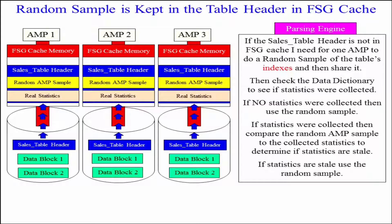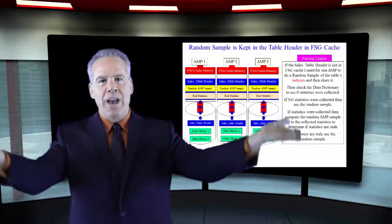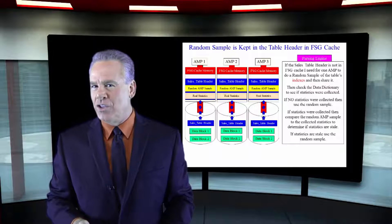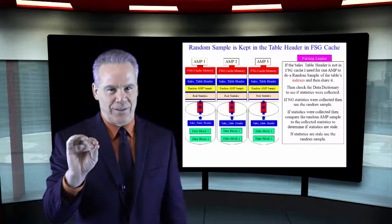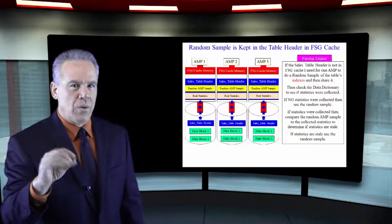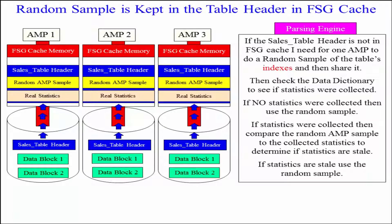Now, whenever you query a table, the parsing engine might say, we're going to do a full table scan. Bring your table header AMPs into FSG cache. Now, bring those data blocks in and they can process this. So, where are random AMP samples kept? In the table header.